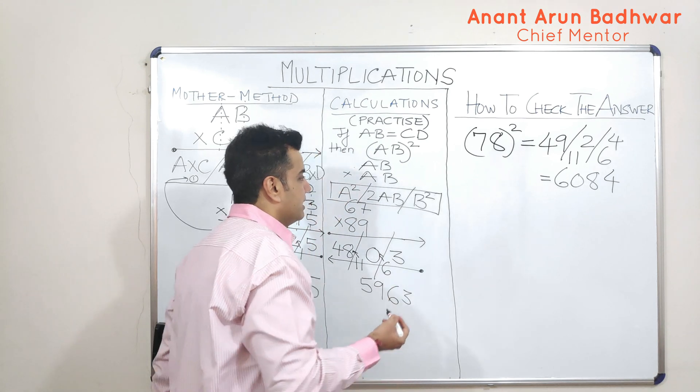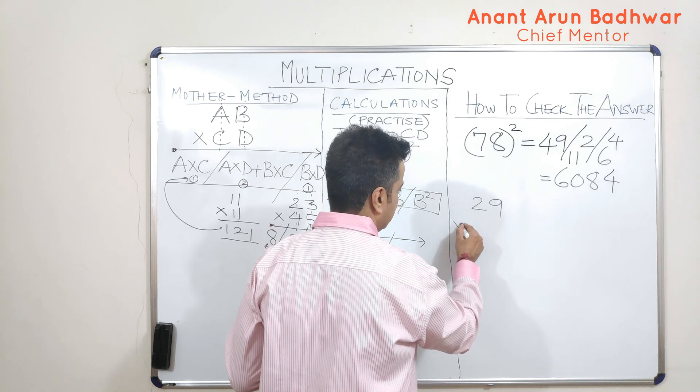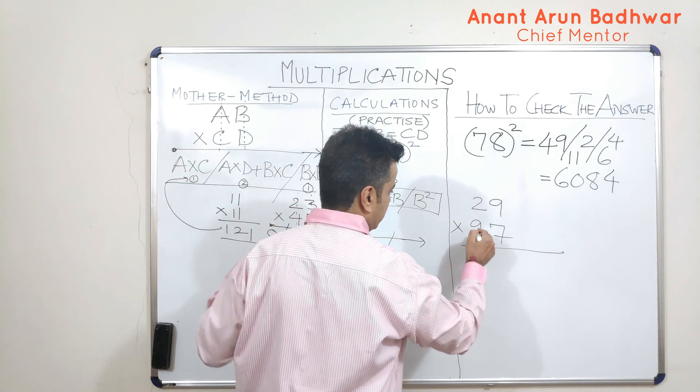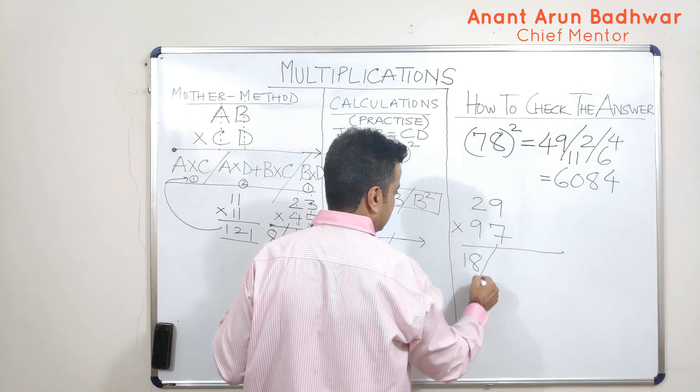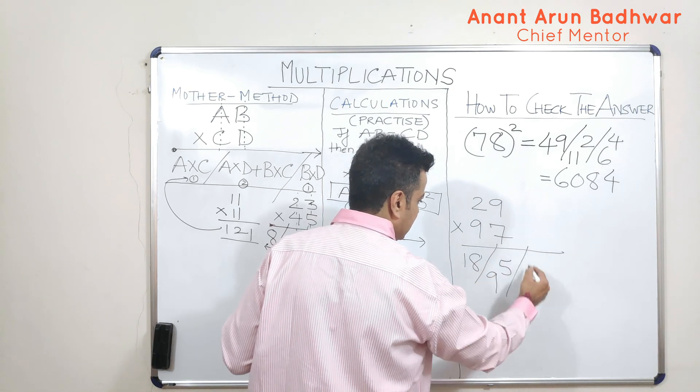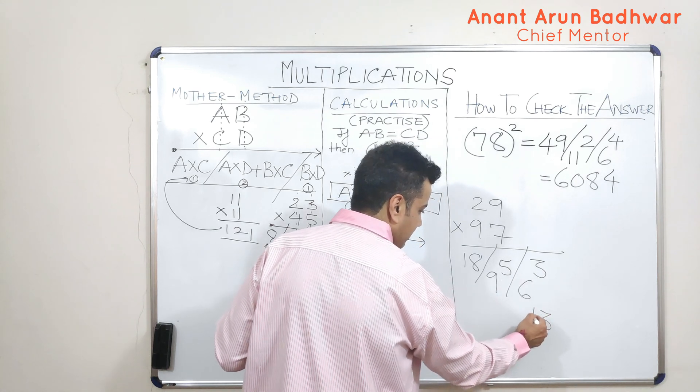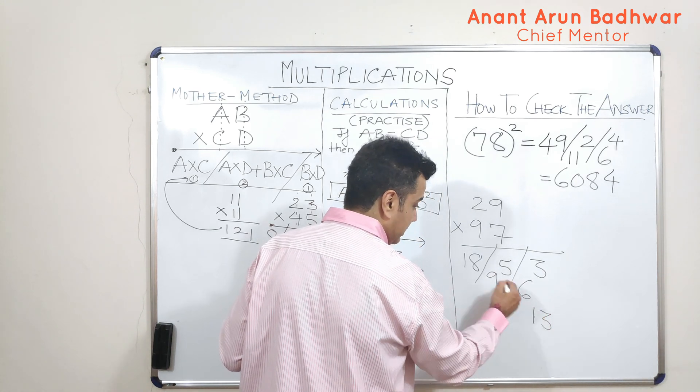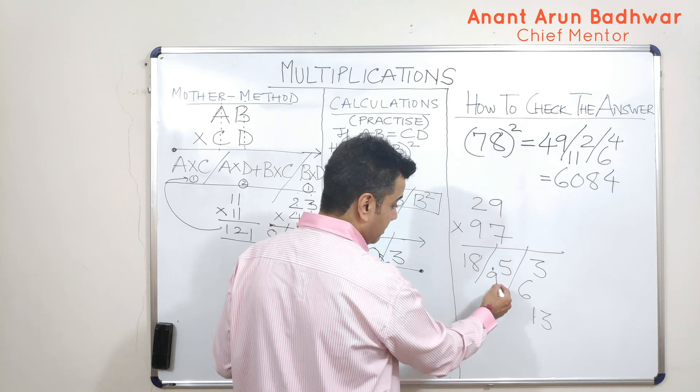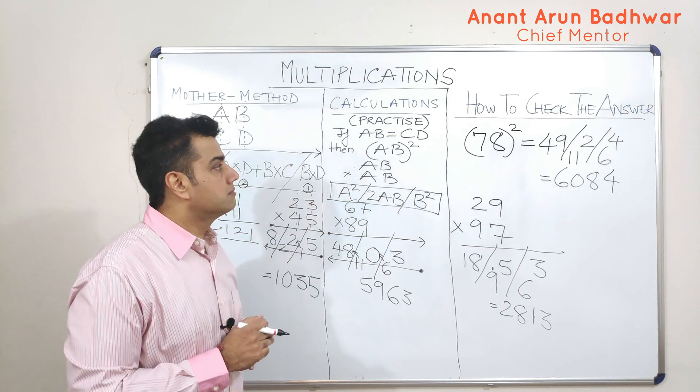Let's take one more example. If somebody gives me a question like 29 has to be multiplied with 97. What will I do? I will use the same mother method. So, 9 into 2 is 18. 14 and 81 makes it 95. And finally, I am getting 63. So, the final answer would be this. 6 plus 5 is 11. Now, this 11 units digit is 1. The 10th digit gets carried here, which makes it 10.